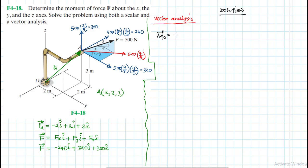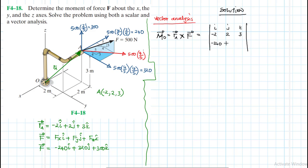Now we invoke the formula: moment about O equals rA cross F, the cross product. We set up the determinant with i, j, k in the first row. We replace rA: minus 2, 2, and 3. We replace the force components: minus 240, 320, and 300.